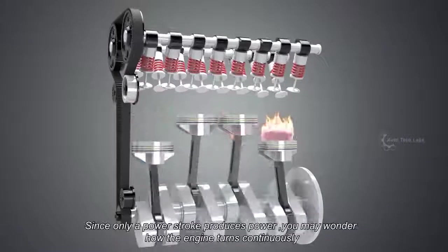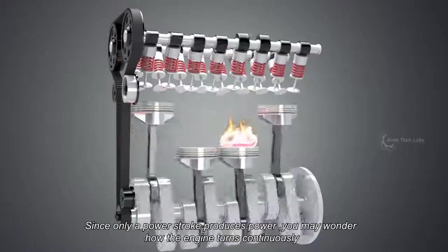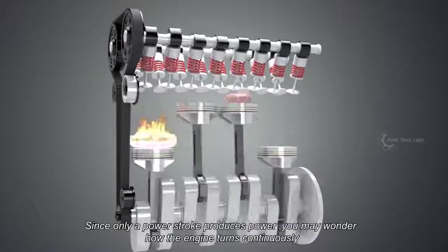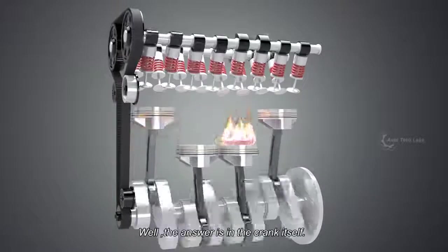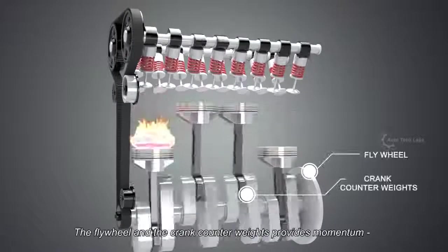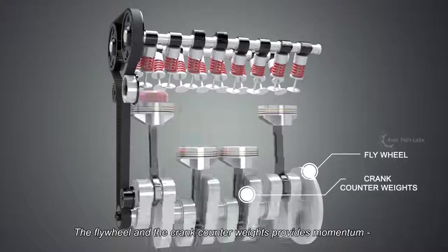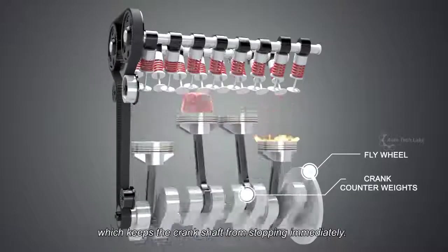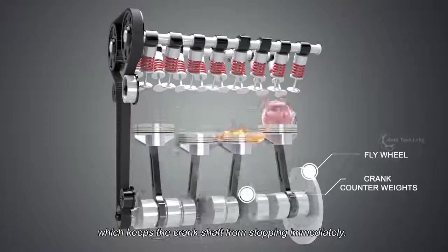Since only a power stroke produces power, you may wonder how the engine turns continuously. Well, the answer is in the crank itself. The flywheel and the crank counterweights provide momentum, which keeps the crankshaft from stopping immediately.